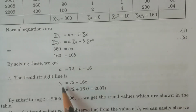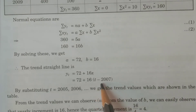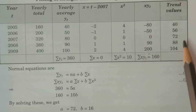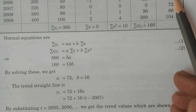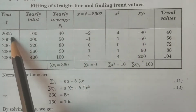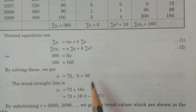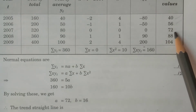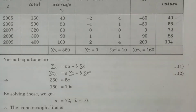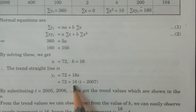Now write the straight line: y_t equals 72 plus 16 times x, where x equals t minus 2007. After substituting, you calculate the trend values. For t equal to 2005, you get the value 40. Then 56, 72, 88, 104 — the increment is 16 each time. The value b equals 16 indicates a yearly increment of 16 from one year to another.